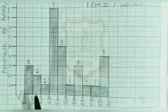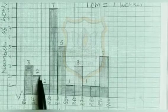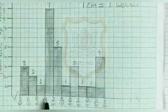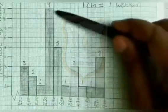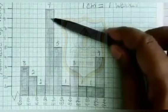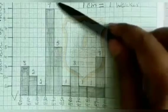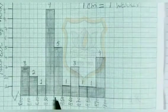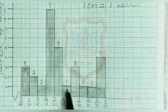The height of the bar shows the frequency of class interval 800 to 810, that is 3. The height of this bar shows the frequency of class interval 810 to 820, that is 2. The height of this bar shows the frequency of class interval 820 to 830, that is 1. The height of this bar shows the frequency of class interval 830 to 840, that is 9. The height of this bar shows the frequency of class interval 840 to 850, that is 5. The height of this bar shows the frequency of class interval 850 to 860, that is 1.